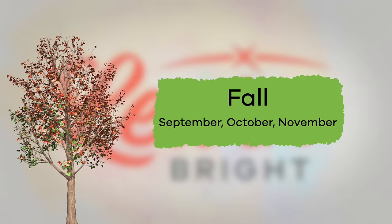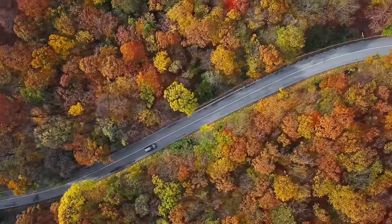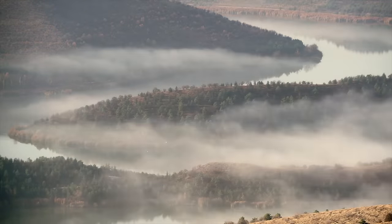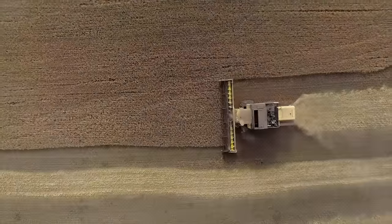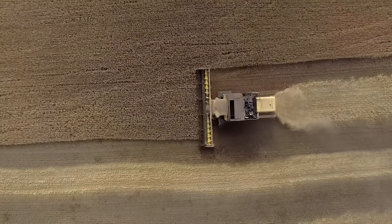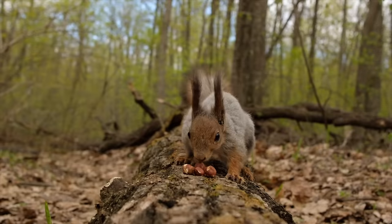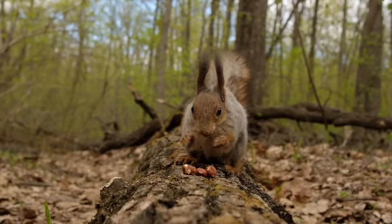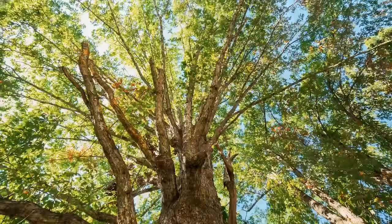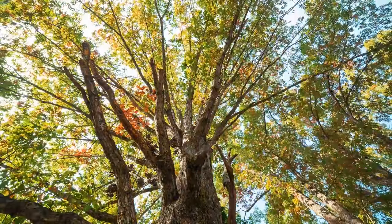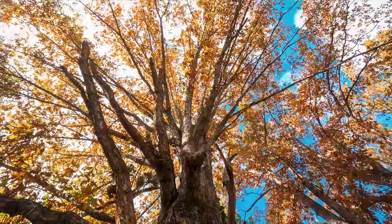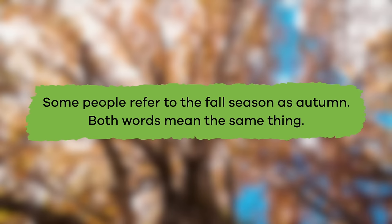Fall: September, October, and November. Fall is the beginning of the colder months, when temperatures start to fall and crops are ready to be harvested. This is also the time when animals start gathering food for the winter months, and when the leaves on trees change colors. Some people refer to the fall season as autumn — both words mean the same thing.